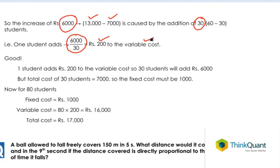The fixed cost remains the same. The fixed cost is not going to change with the number of students. So whatever change happens to the variable cost, this change is brought by the 30 students who have got added.